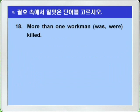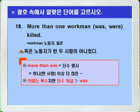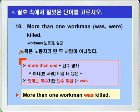Question 18: 'More than one workman was/were killed.' 'More than one + singular noun' means 'more than one ~,' and though the meaning is plural, it is treated as singular. Therefore the singular verb 'was' is the answer. Answer: More than one workman was killed.